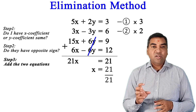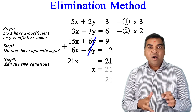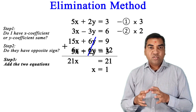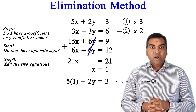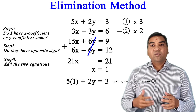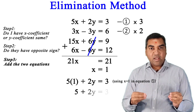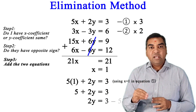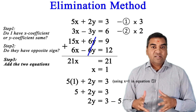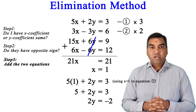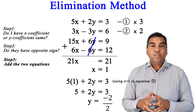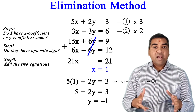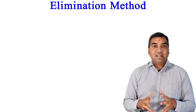Substituting x = 1 into 5x + 2y = 3: 5(1) + 2y = 3, so 5 + 2y = 3, giving 2y = 3 - 5 = -2, so y = -1. The final answers are x = 1 and y = -1. You have now mastered all four kinds of elimination questions.